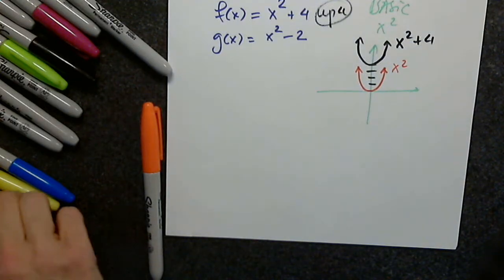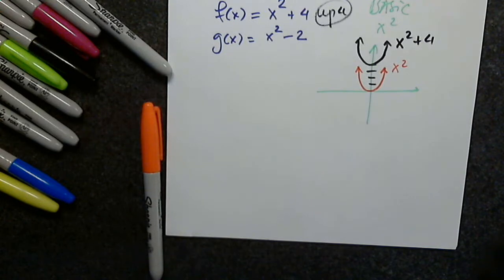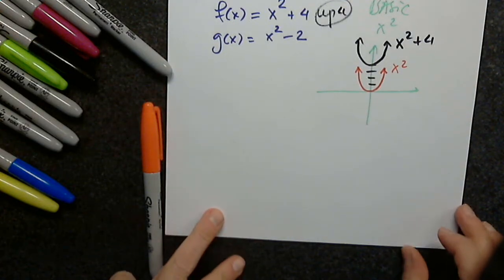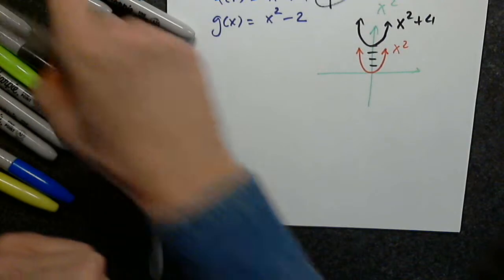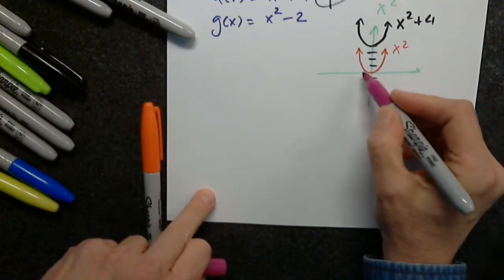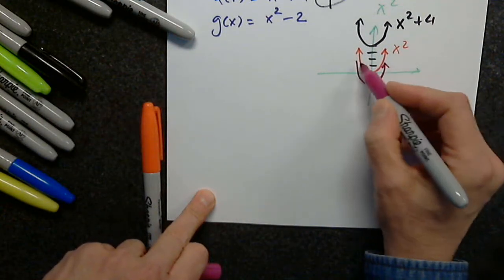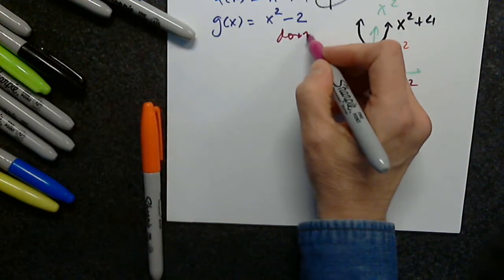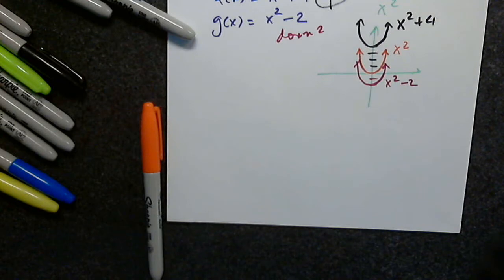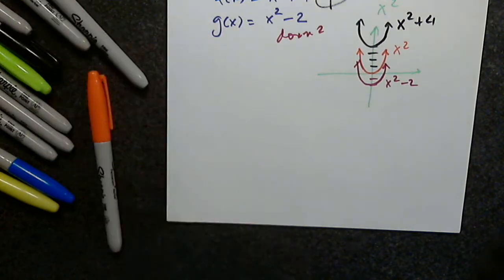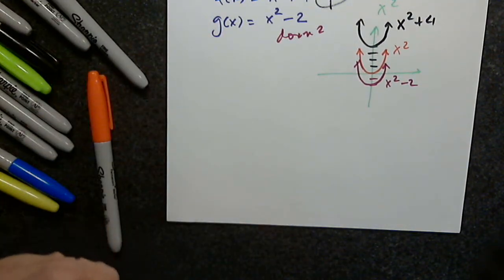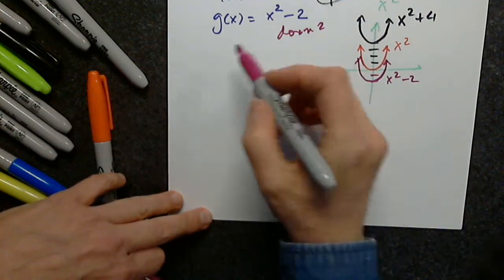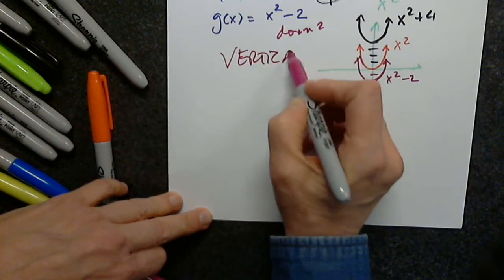What do you think the next one will be? Function g: x² - 2. Down 2. So here's the graph of x² - 2, down 2. This is very clear — it's a vertical shift. The first one was vertical shift up 4, the second one is vertical shift down 2. So this was a vertical shift.